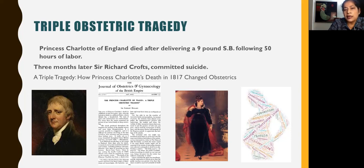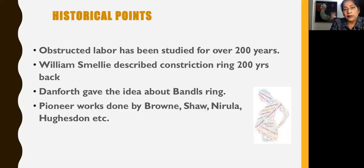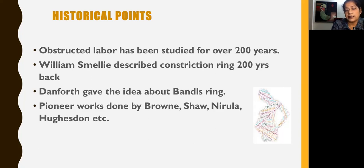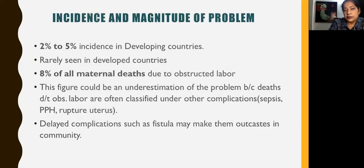This death of Princess Charlotte in 1817 changed the whole of obstetrics and the way they managed it in England. Obstructed labour has been studied for over 200 years. William Snelli described the constriction ring 200 years back. Danforth gave the idea about Bandl's ring, and subsequent pioneering work was done by Brown, Shaw, Nerula, and Huggitson. The incidence of obstructed labour is 2–5% in developing countries, and because of better labour care and management, it is rarely seen in developed countries.